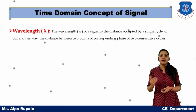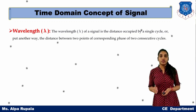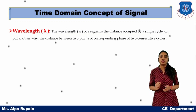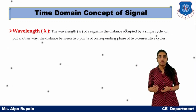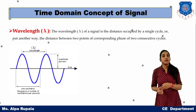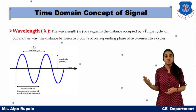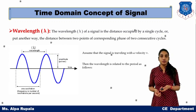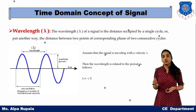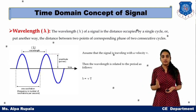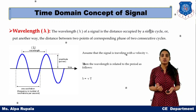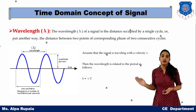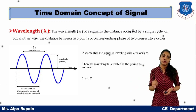The last definition for the time domain concept is wavelength. Wavelength is the distance occupied by your signal for a single period or cycle, represented by lambda. If a signal has velocity v, then the relationship between wavelength lambda and period T is: lambda = v × T.